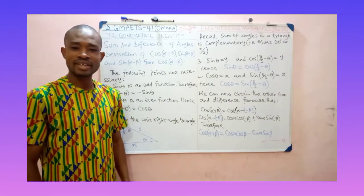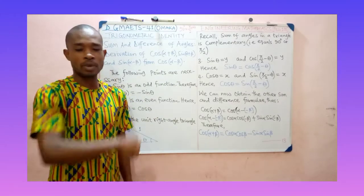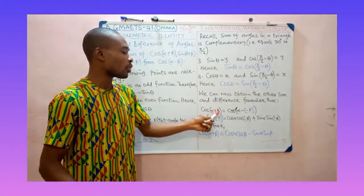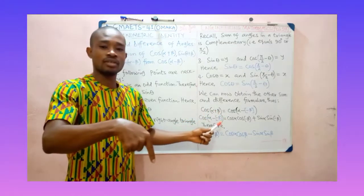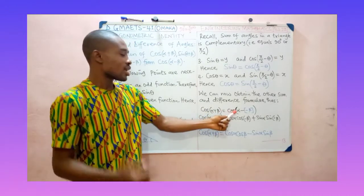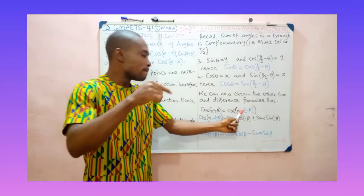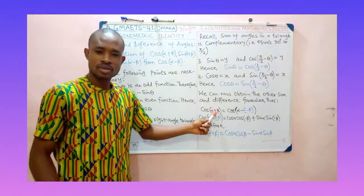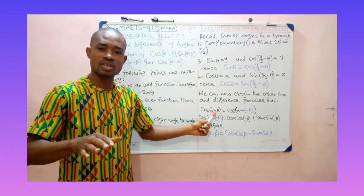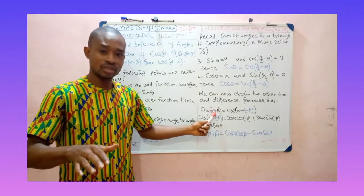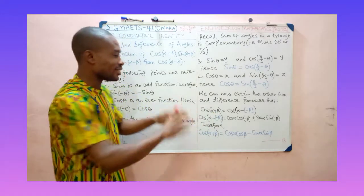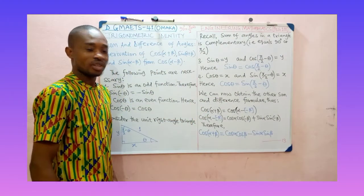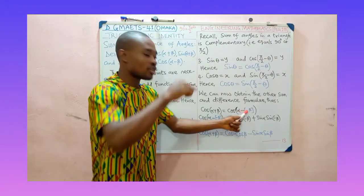Now let us get the value of cos(α+β). Cos(α+β) will be written as cos(α−(−β)), because minus minus will still give you plus, so mathematically you are consistent. We want to express this in terms of cos(α−β), so the plus is written as minus minus.